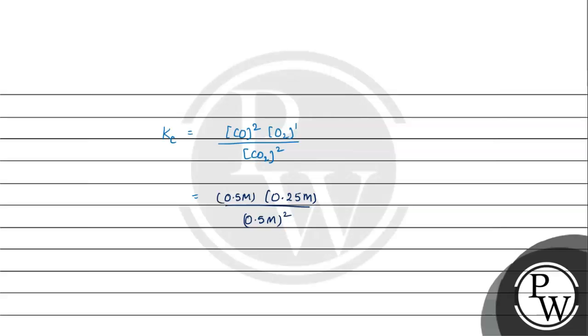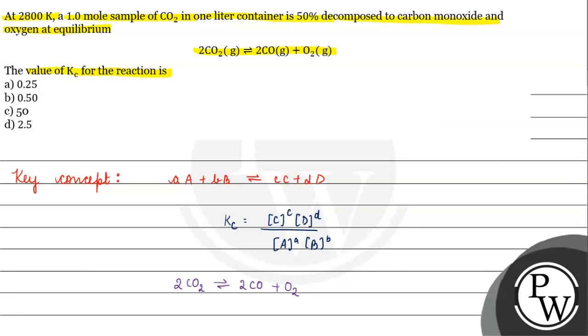Carbon monoxide concentration is 0.5 molar to the power 2, which equals 0.5 squared times 0.25 divided by 0.5 squared. This equals 0.25. The answer to this question is 0.25, option A. I hope you understood it well. Thank you and all the best.